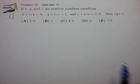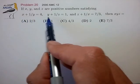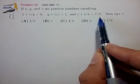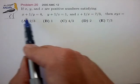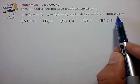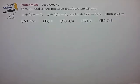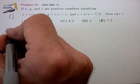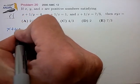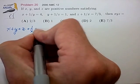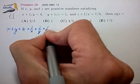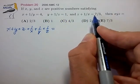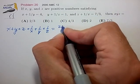One obvious manipulation to work with these cyclic expressions is to just add all three equations together, and that'll almost certainly create expressions that match the symmetry of the target expression. So adding all three equations together, we just end up with x plus y plus z is equal to 4 plus 1 plus 7 thirds, that's 22 thirds.